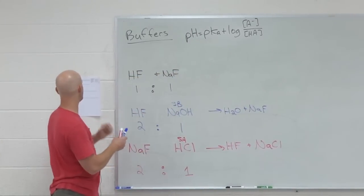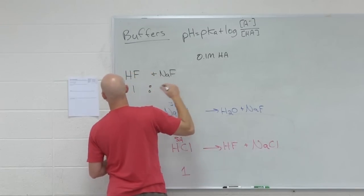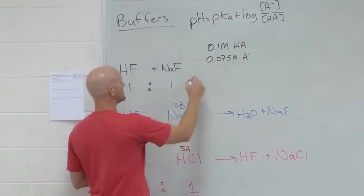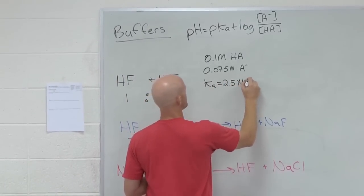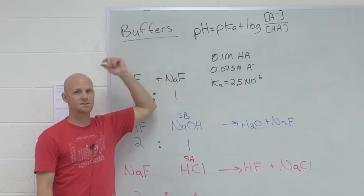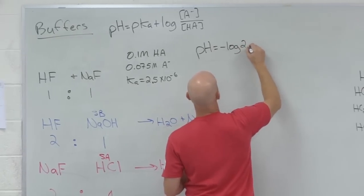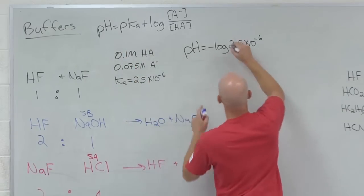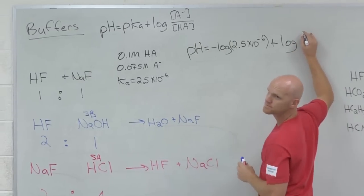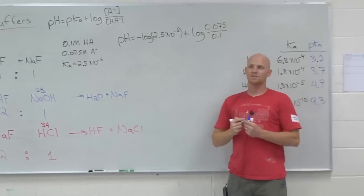So now let's do a buffer calculation. What is the pH of a solution that is 0.1 molar in H-A and 0.075 molar in its conjugate base. And then you're given that the Ka of the acid is 2.5 times 10 to the negative 6. It's plug and chug. We're just going to plug everything into the Henderson-Hasselbalch to get the pH directly. And so in this case, your pH would equal the negative log of the Ka plus the log of 0.075 over 0.1. And it's just plug and chug from here on out. That's why it's so nifty to use the Henderson-Hasselbalch. You get the pH directly. You don't get like H plus and then have to take a negative log after that. Just go straight to pH.